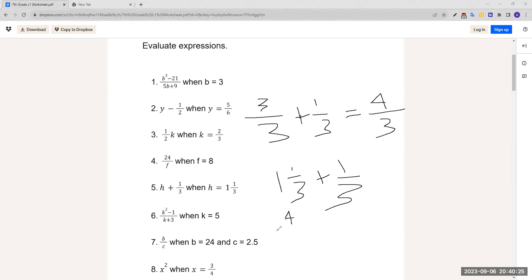To simplify, it would be 4 over 3 plus 1 over 3, which equals 5 over 3. We can't simplify this one, so our answer would just be 5 over 3.